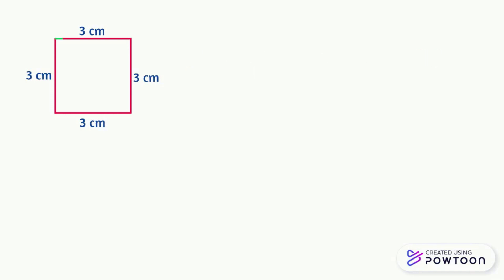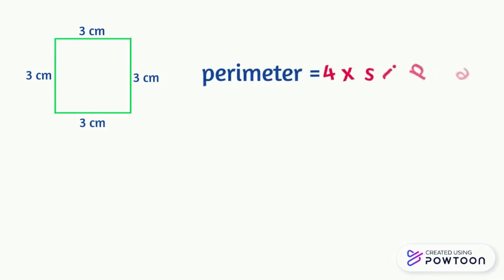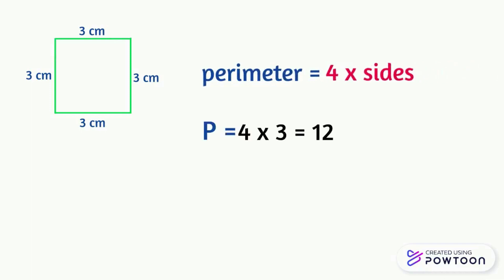Notice that the square has 4 equal sides. So simply, the perimeter of a square is equal to 4 times the length of its side, which is 4 times 3 equals 12. So the perimeter is 12 centimeters.